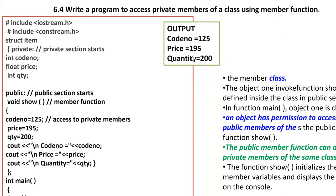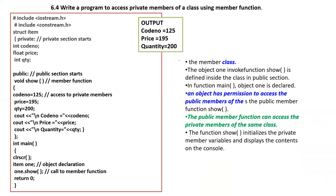The output is like this. The explanation is that public members can access the private members of the class. This provides data hiding and security, because in the private access section, the public member function can access the private data.